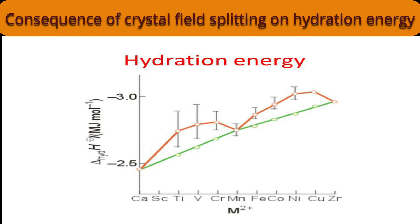By the green line, Ca²⁺, Mn²⁺, and Zn²⁺ hydration energies represent our expected trend. As we move from Ca²⁺ (d⁰) to Zn²⁺ (d¹⁰), with increasing cation charge and decreasing size, the power to attract water molecules increases, so hydration energy increases. From Ca²⁺ to Zn²⁺ via Mn²⁺, a steady increase was expected — shown by the green line. But reality is different, shown by the red curves, and that reality can be explained by crystal field theory and electronic distribution.